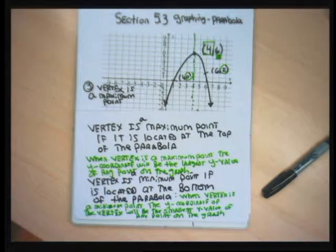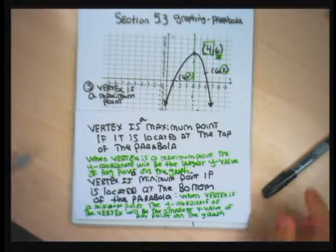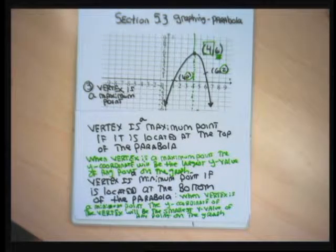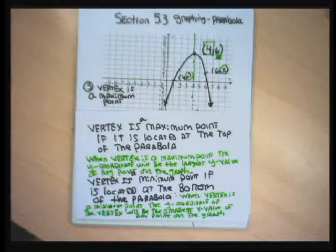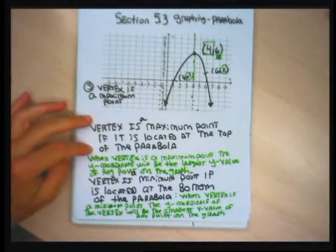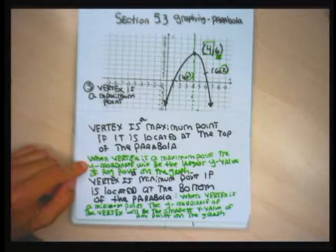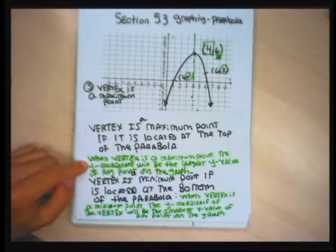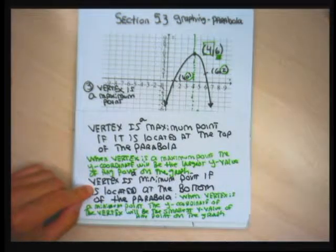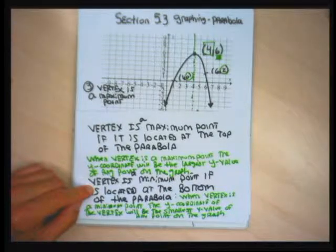This is everything we need to know about parabolas in our class. The vertex is a maximum point if it's at the top; when it is, the y-coordinate of the vertex is the largest y-value. The vertex is a minimum point if it's at the bottom; when it is, the y-coordinate of the vertex is the smallest y-value.